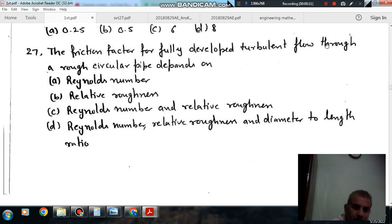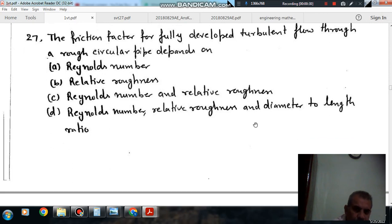Question number 27 is: the friction factor for fully developed turbulent flow through a rough circular pipe depends on option A, Reynolds number, option B, relative roughness, option C, Reynolds number and relative roughness, option D, Reynolds number, relative roughness and diameter to length ratio.